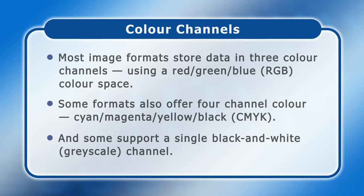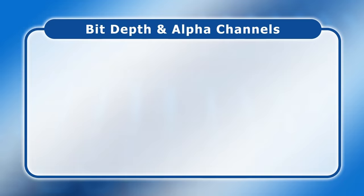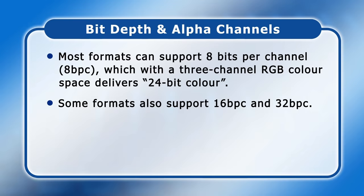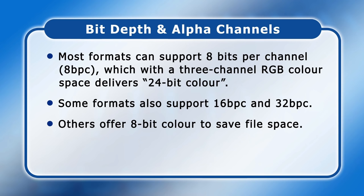Different image formats also store different quantities of colour information. Most formats can support 8 bits per channel, or 8 BPC, which with a three-channel RGB colour space delivers what is known as 24-bit colour. Whilst this is absolutely sufficient for most purposes, some file formats also support 16 and even 32 bits per colour channel, which provides greater flexibility in image manipulation. At the other end of the spectrum, a few image formats offer the opportunity to store just 8-bit colour, which limits the number of colours in an image to 256 in order to save file space.